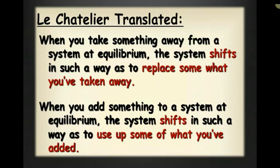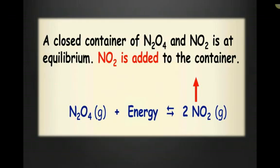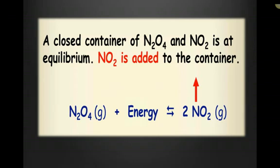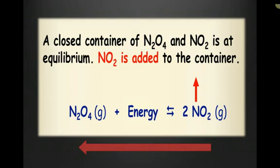We're now going to look at some stresses. A closed container of dinitrogen tetraoxide and nitrogen dioxide is at equilibrium. What happens if I add NO₂ to the container? If the concentration of NO₂ increases, the equilibrium is going to shift to the left to get rid of that extra NO₂, shifting in the reverse direction to establish a new point of equilibrium.